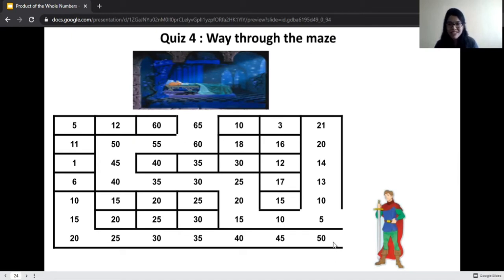Let us try our answer. If the prince goes from this path, this is also the table of five but it ends over here. He will never reach sleeping beauty. Let us try another path. This is five. Five one is a five. Five two is a 10. Five three is a 15. Five four is a 20. Five five is a 25. Five six is a 30. Five seven is a 35. Five eight is a 40. Five nine is a 45. Five ten is a 50.